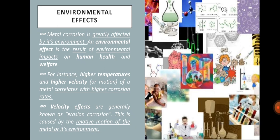Environmental effects: metal corrosion is greatly affected by its environment. An environmental effect is the result of environmental impacts on human health and welfare. For instance, higher temperatures and higher velocity or motion of a metal correlates with higher corrosion rates. Velocity effects are generally known as erosion corrosion, which is caused by relative motion of the metal or its environment.